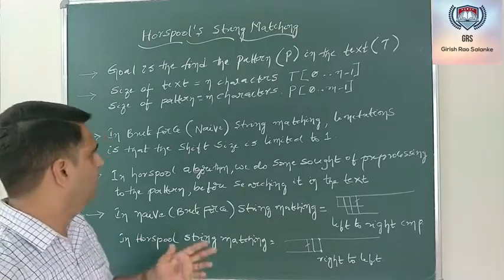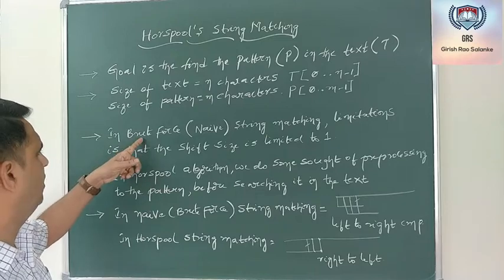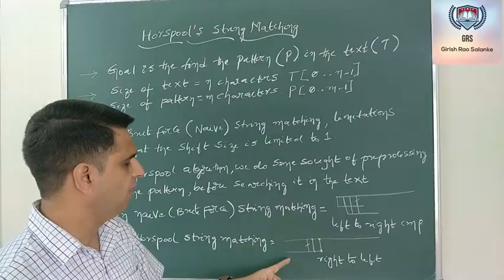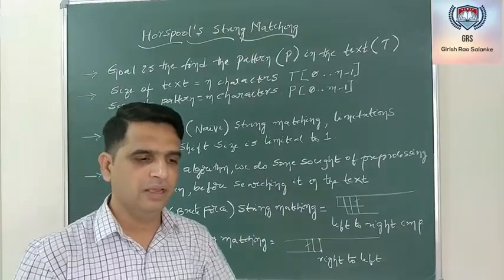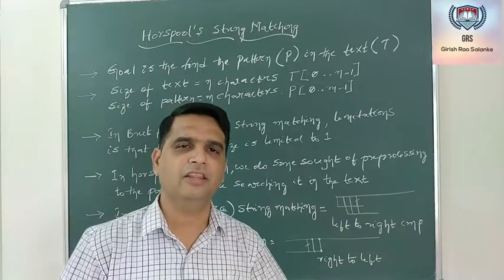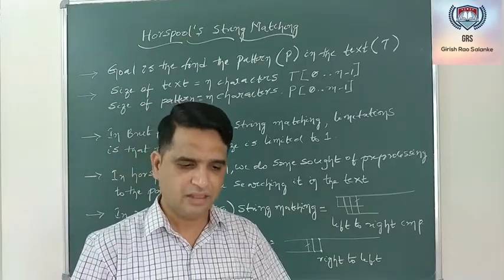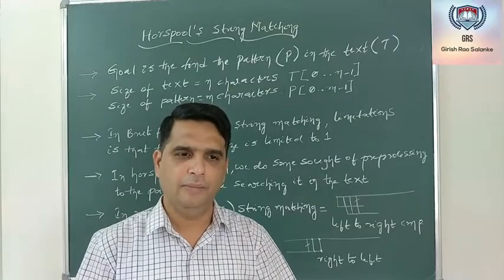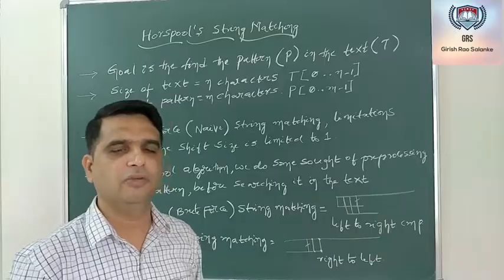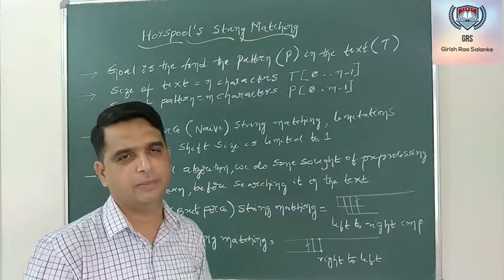Another difference: in brute force, the shift size is limited to 1. In Horspool string matching, the shift size minimum is 1, but maximum it might be the length of the pattern. In the best case, I can shift the pattern by the length of the pattern itself. These are the two major differences between NAV and Horspool.